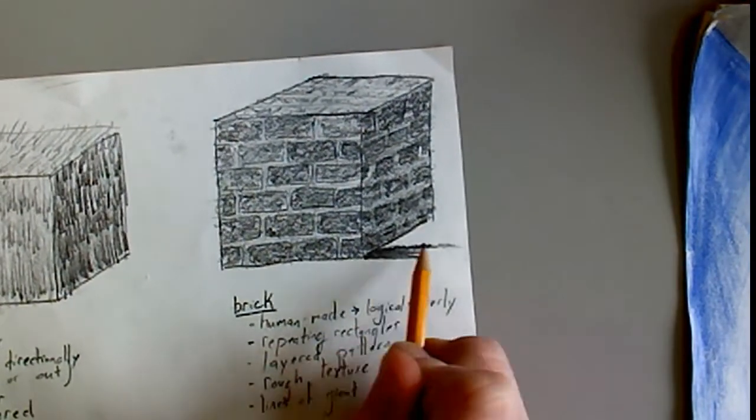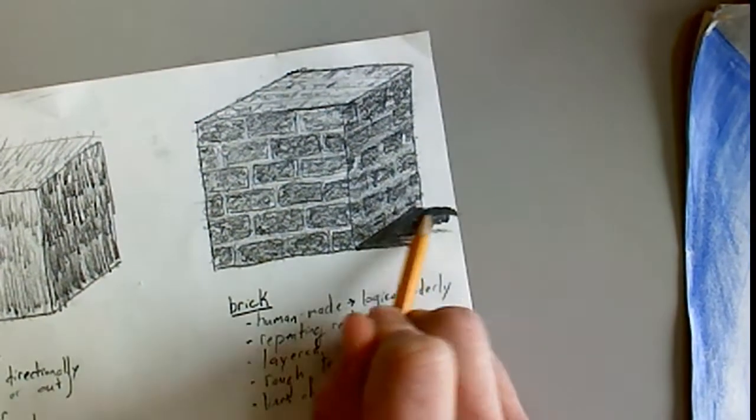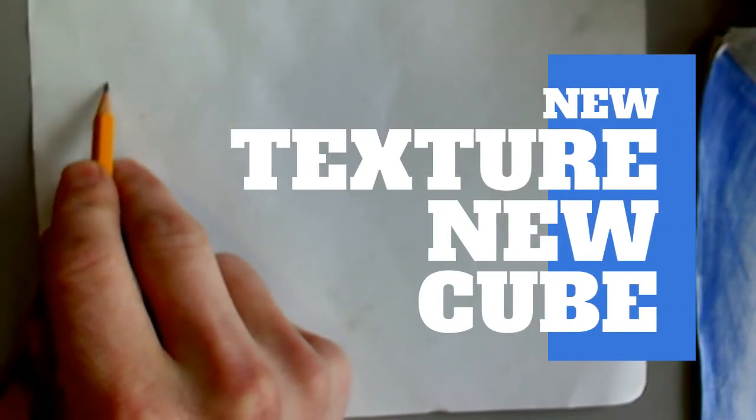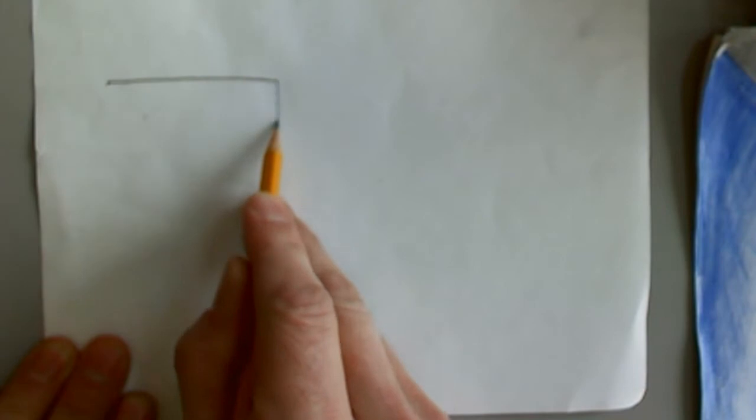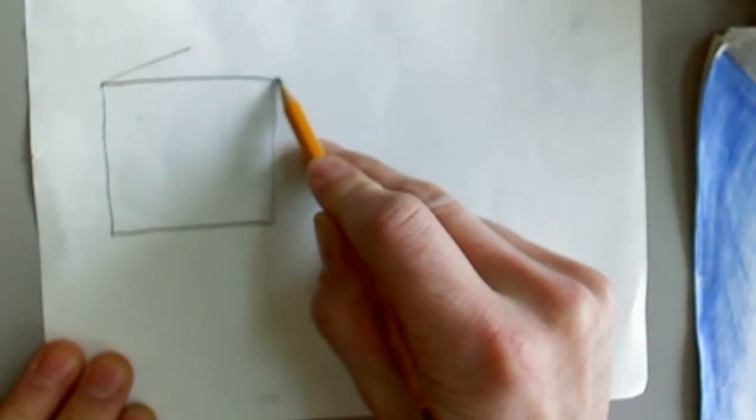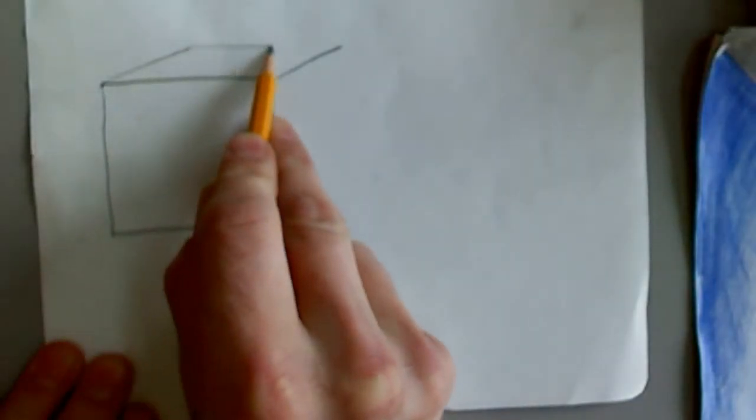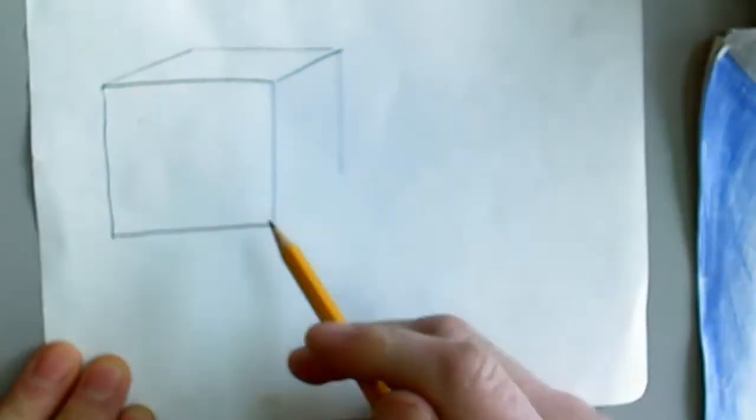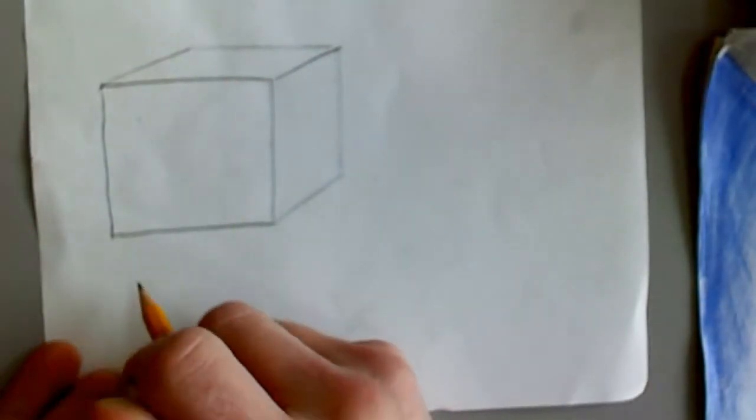Now we're going to make another texture, so we're going to go ahead and make another square, making sure to leave room for a fourth texture, as well as allowing both of them to become cubes. So we're going to start with a square and make a cube using those three diagonal lines coming off of adjacent corners. For this texture, we're going to make waves or a watery texture.